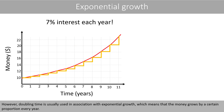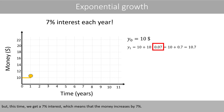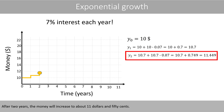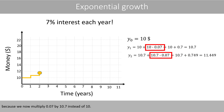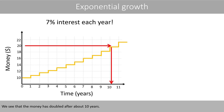However, doubling time is usually used in association with exponential growth, which means that the money grows by a certain proportion every year. Same as before, we place ten dollars in the bank and wait one year, but this time we get seven percent interest, which means the money increases by seven percent. The money therefore grows from ten dollars to ten dollars and seventy cents. After two years, the money increases to about eleven dollars and fifty cents. Note that more money is added after year two because we now multiply 0.07 by 10.7 instead of 10. Each year the money grows by seven percent, and we see that the money has doubled after about ten years.